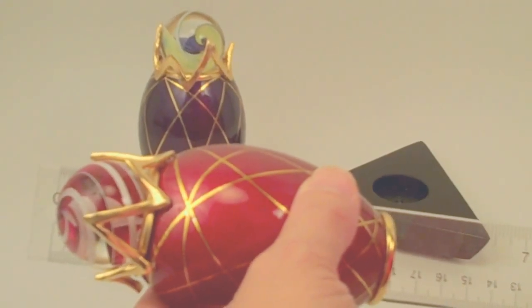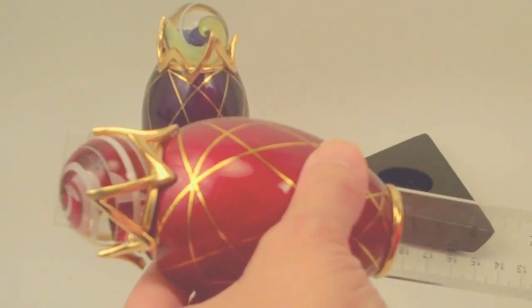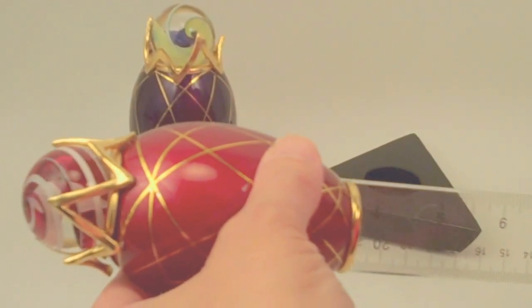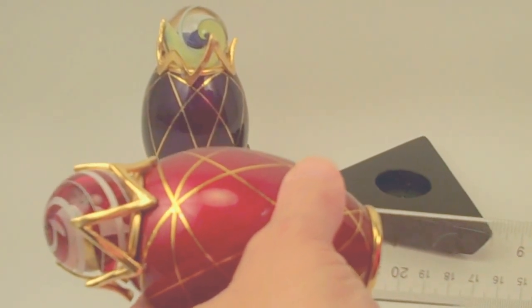Now each kaleidoscope has dimensions, total height of four and a half inches. The egg portion itself is approximately three and a quarter inches.